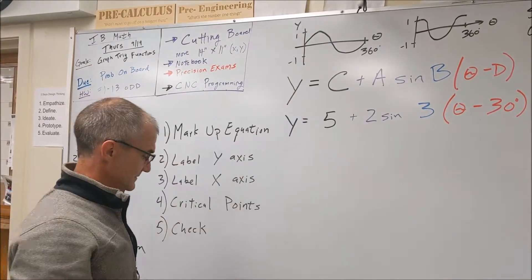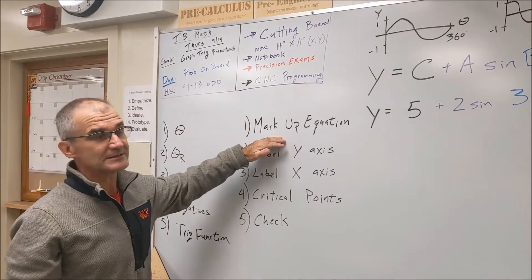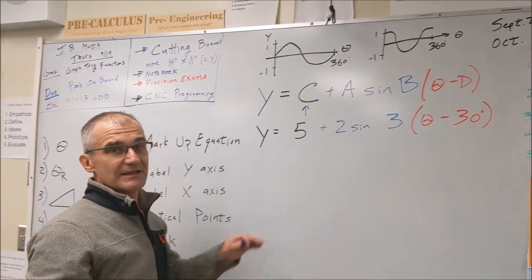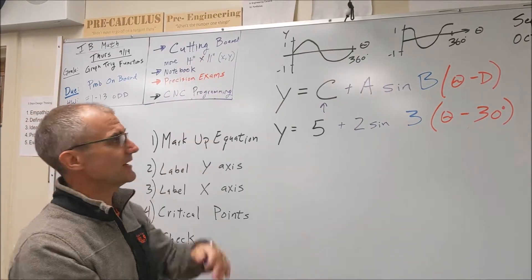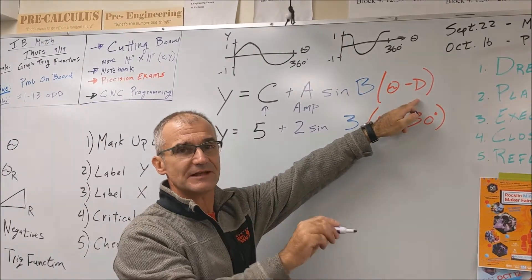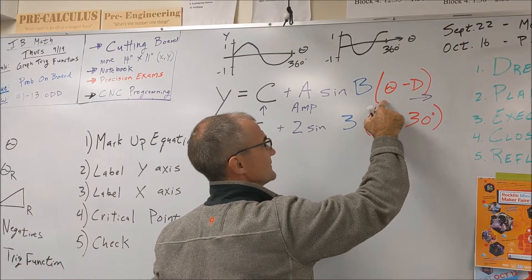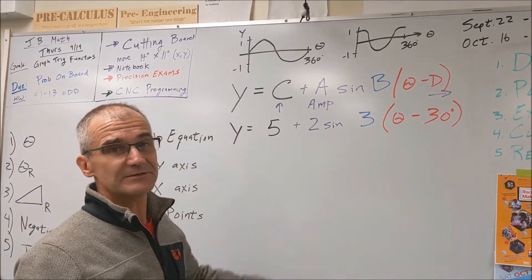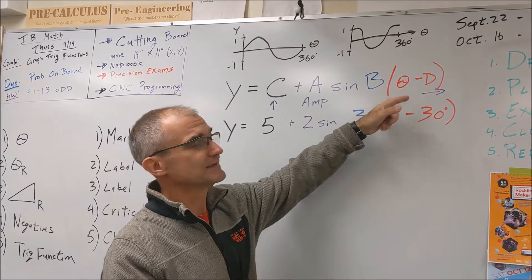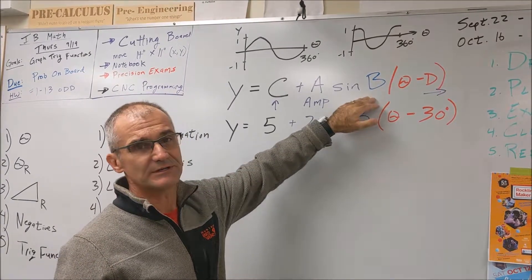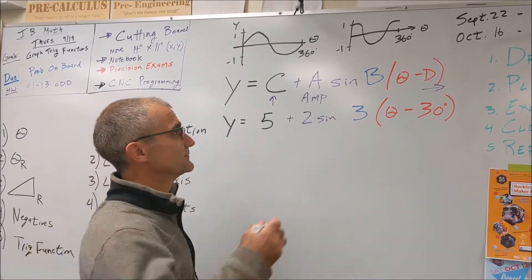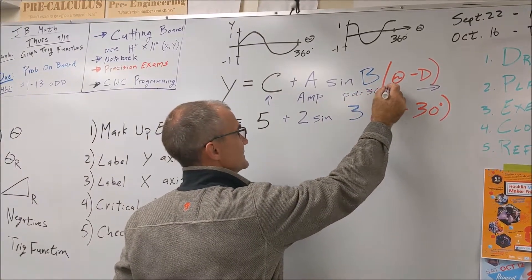On the general equation — this is step one, mark up the equation. C is vertical shift, so that pushes the graph up. A is amplitude; it's how much it elongates the graph. D is phase shift — how far it pushes it over. Just like in algebra two, a negative pushes it to the right, and a positive pushes it to the left. B gives you your period — it's not your period, but 360 divided by B will give you your period.